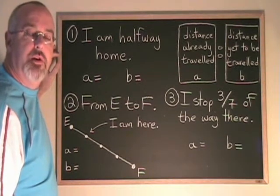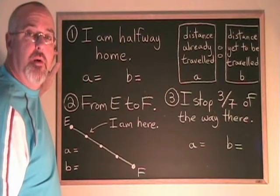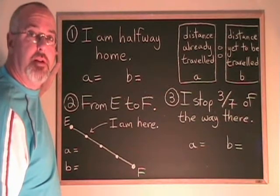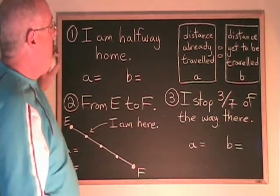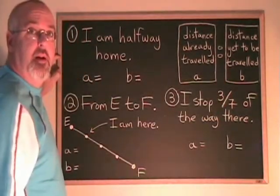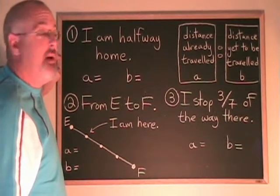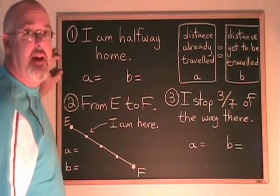Before we can use the ratio formula in our advanced straight lines course, we have to understand the ratio concept. The ratio formula has a value a and a value b, and a represents the distance already traveled, b represents the distance yet to be traveled.